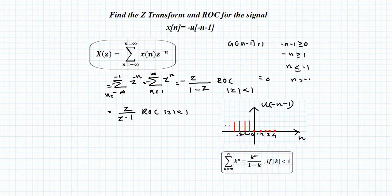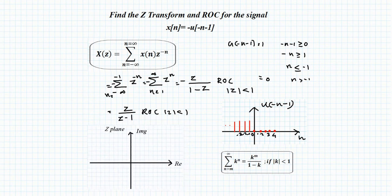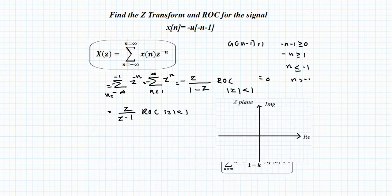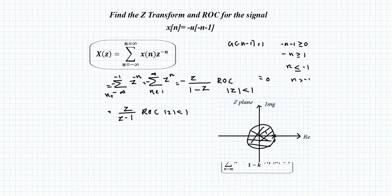The ROC |z| < 1 corresponds to the interior of the unit circle in the Z-plane. Graphically, the unit circle has radius 1, and the ROC is the region strictly inside this circle. This result can also be obtained from the standard result for −a^n · U[−n − 1] with a = 1.